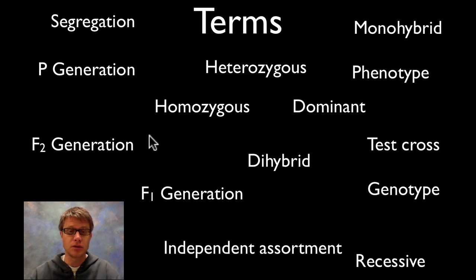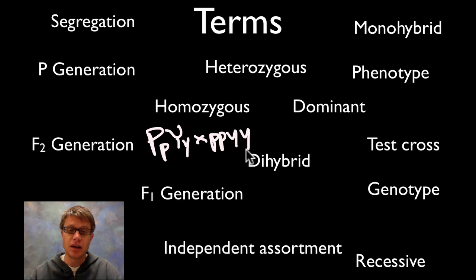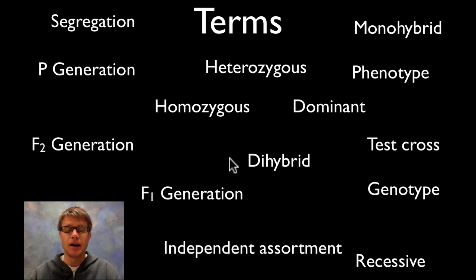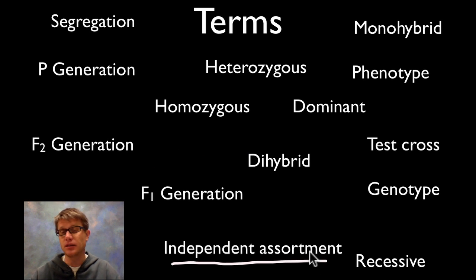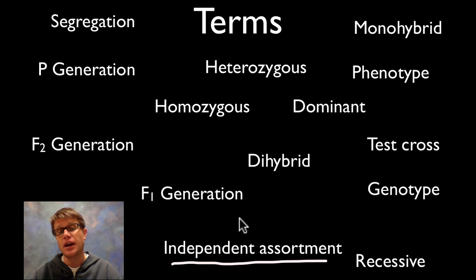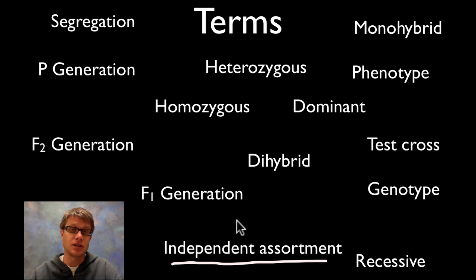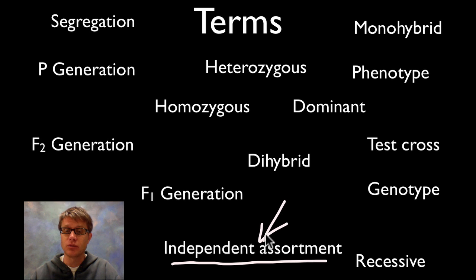A dihybrid cross would look something like this: big P, little p, big Y, little y — so a cross like that would be a dihybrid cross. Independent assortment basically means that two different genes — for example, flower color and whether or not the seeds are wrinkled — aren't going to affect each other. In other words, they assort independently. That takes place in meiosis 1 as the homologous chromosomes separate.